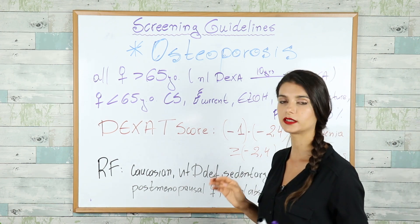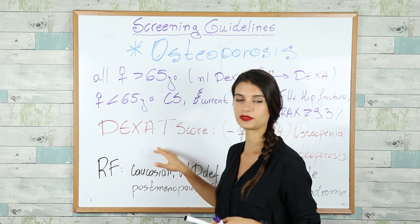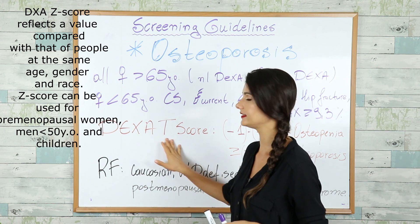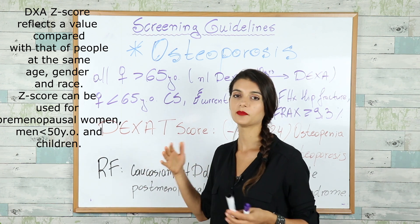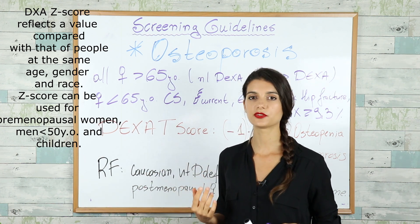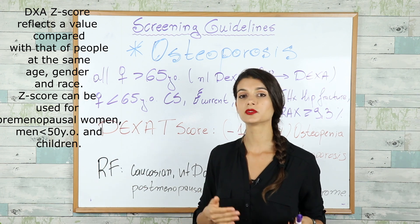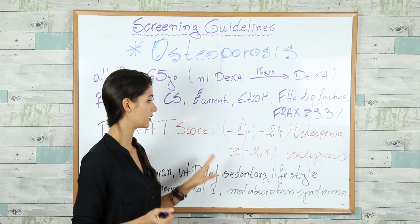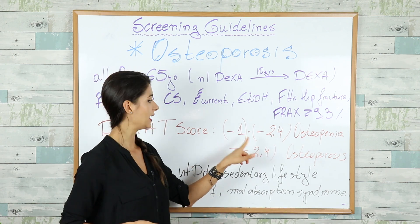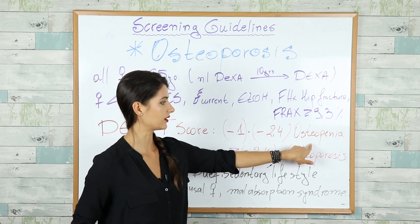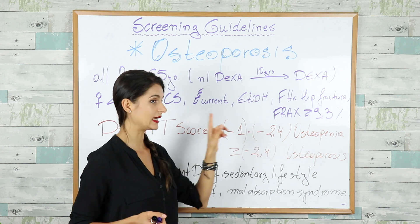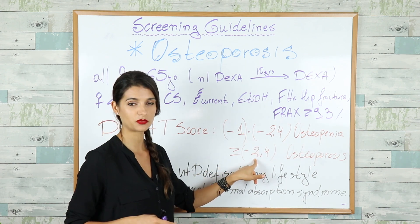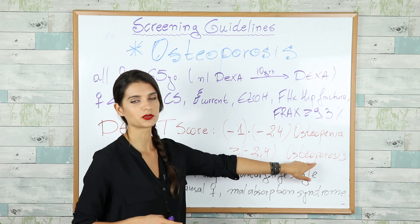How do we interpret the DEXA score? We use the DEXA T-score, which compares the bone density of your patient to the bone density of a woman who is 30 years of age. If the DEXA T-score is between minus 1 and minus 2.4, then you diagnose osteopenia. But if the DEXA T-score is more than or equal to minus 2.4, then you have diagnosed osteoporosis.